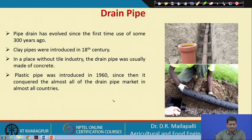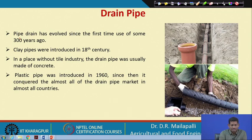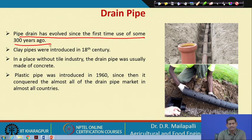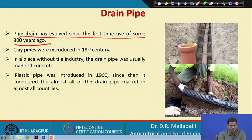The drain pipe consists of small pieces of pipes used in drain pipe installation. Drain pipes have evolved since they were first used some 300 years ago — they are not a new thing. Clay pipes were more prominent in the 18th century.